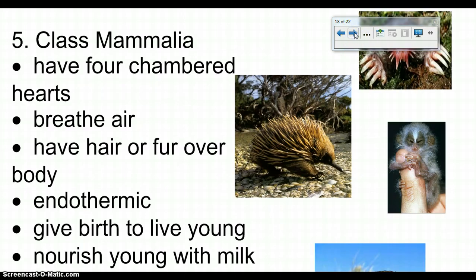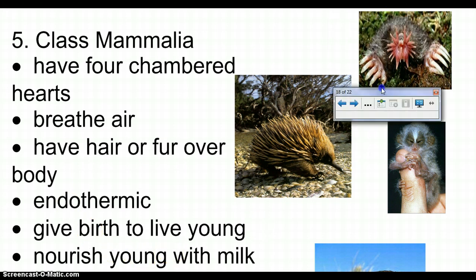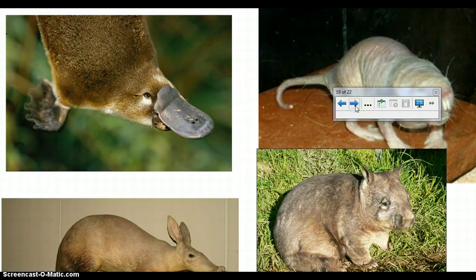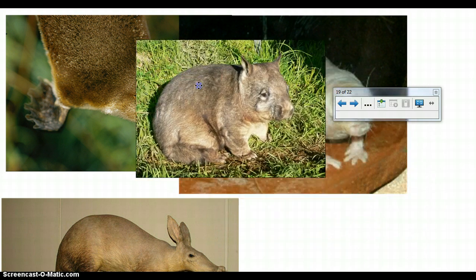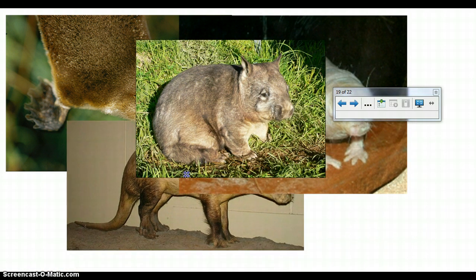The last group are mammals. Mammals are characterized by a four-chambered heart, breathing air, having fur or hair over their body, being endothermic (warm-blooded), giving birth to live young, and nourishing their young with milk. Examples include a platypus, a naked mole rat, a wombat (a marsupial), and an aardvark.